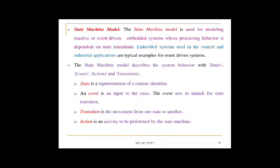The state machine model is used for modeling reactive or event-driven embedded systems whose processing behavior depends on state transitions. Embedded systems in control and industrial applications are typical examples. The state machine model describes system behavior with four elements: state (representation of a current situation), event (input that acts as stimulus for state transition), transition (movement from one state to another), and action (activity to be performed by the state machine).